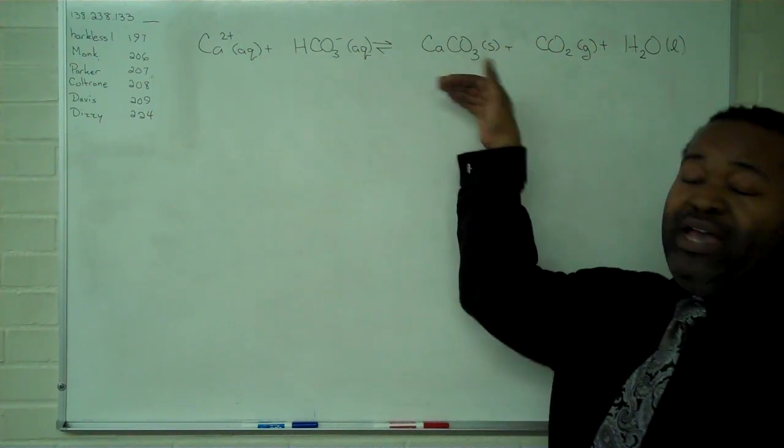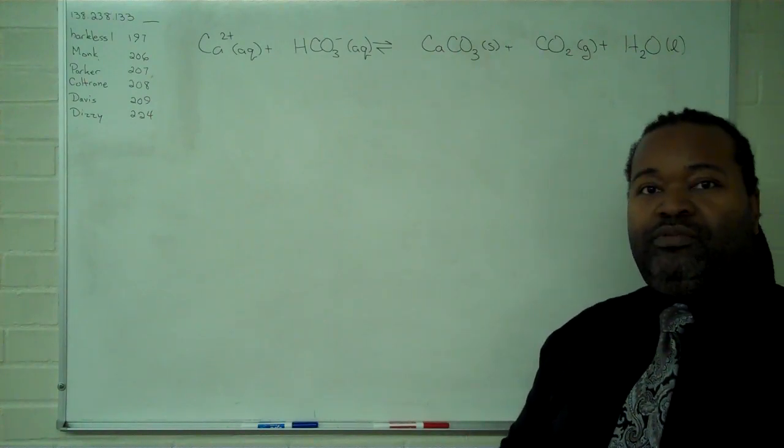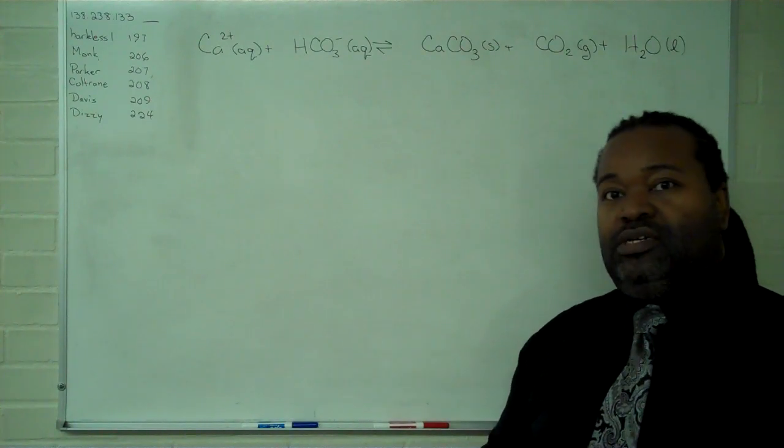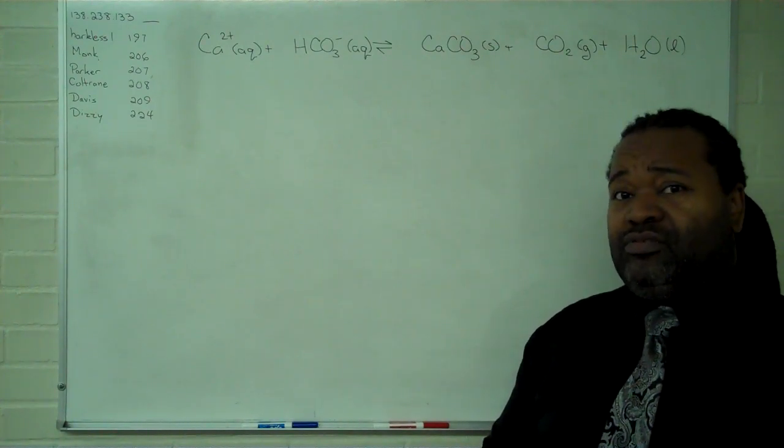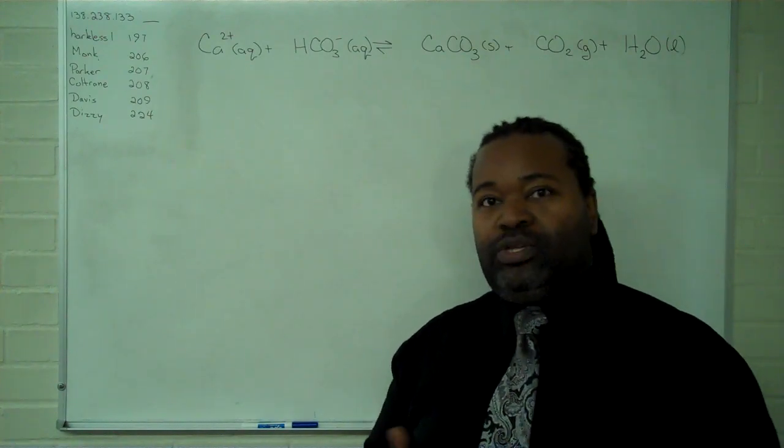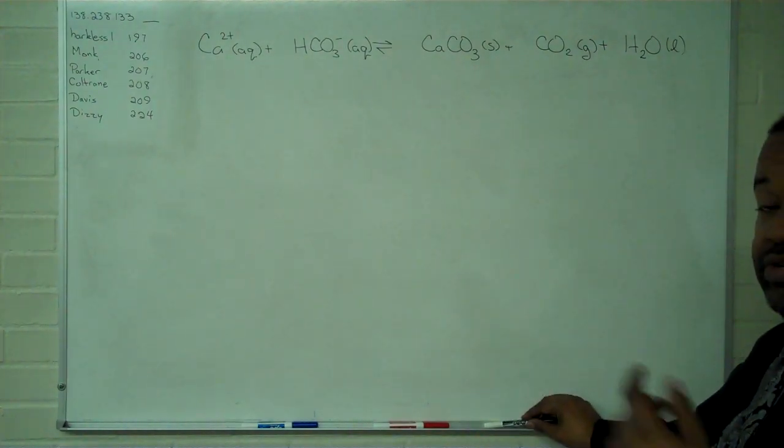The first step is to balance the reaction. The second step is to write out the equilibrium constant expression using concentrations of products over concentrations of reactants. And then the final step is to retain only the pieces and parts that matter, as you'll see as I demonstrate these steps.